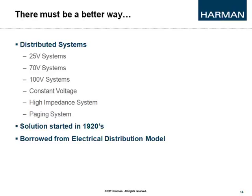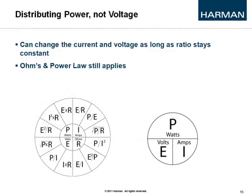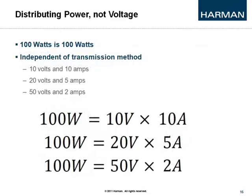This isn't new technology — it's been around since the 1920s, when engineers started distributing electricity over longer distances. They found that you can change the current and voltage as long as the ratio stays the same, based on Ohm's law and the power law. As long as the wattage stays the same, you can still distribute it easily. So distributing 100 watts is the same as 10 volts at 10 amps, 20 volts at 5 amps, 50 volts at 2 amps, or 2 volts at 50 amps — as long as it multiplies out to 100 watts.